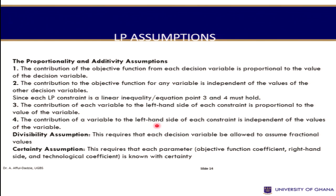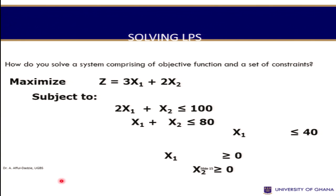There are certain assumptions to consider. First, the contribution of the objective function from each decision variable is proportional to the value of that decision variable. Second, the contribution to the objective function for any variable is independent of the values of the other decision variables.